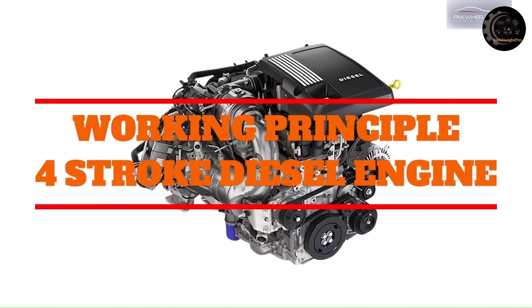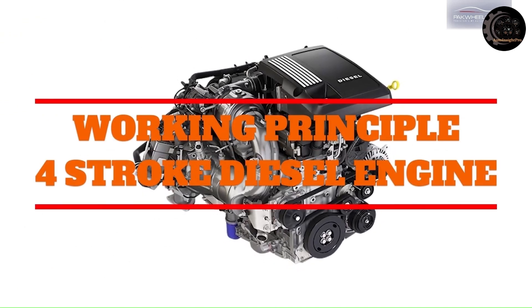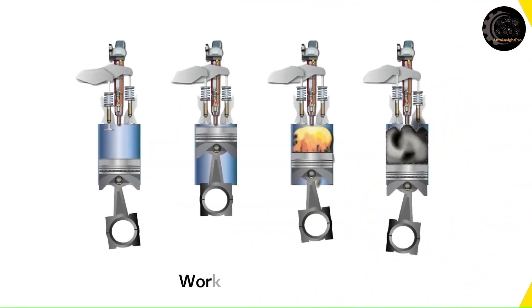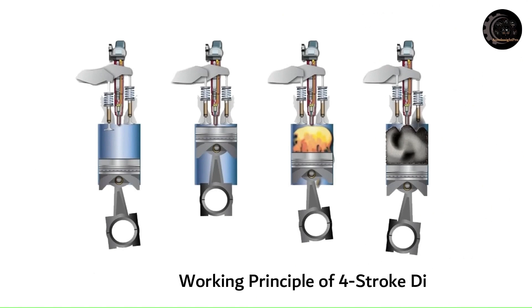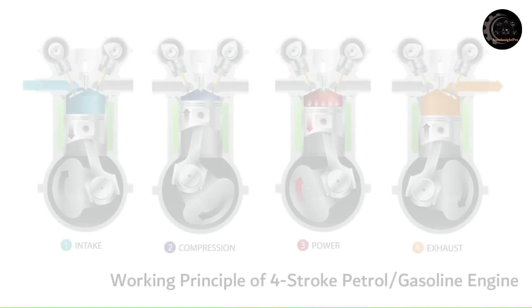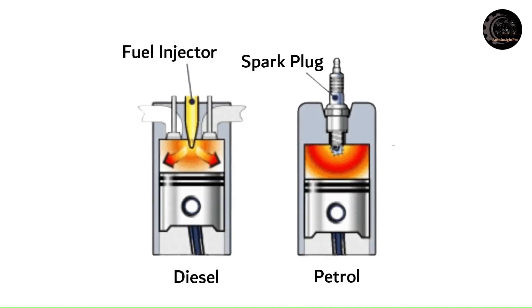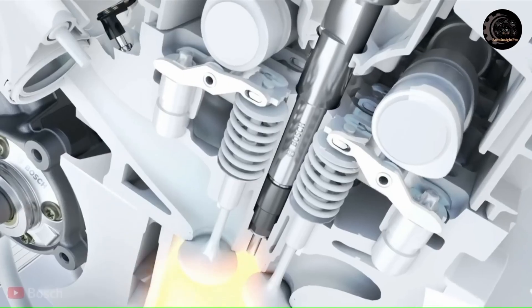Working of a four-stroke diesel engine: The basic construction of a four-stroke diesel engine is the same as that of a four-stroke petrol engine, except that instead of a spark plug, a fuel injector is mounted in its place. A fuel pump supplies fuel oil to the injector at higher pressure. It works on the diesel cycle, or constant pressure cycle.